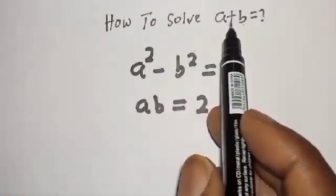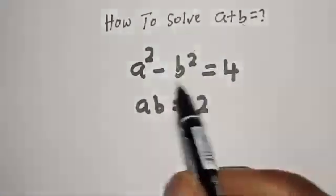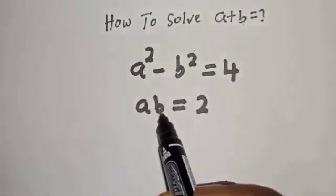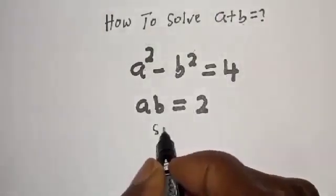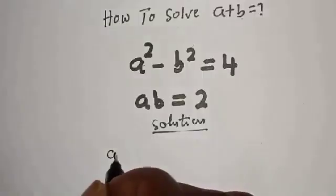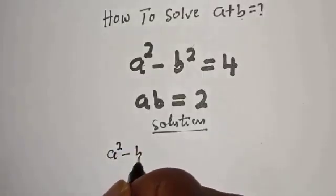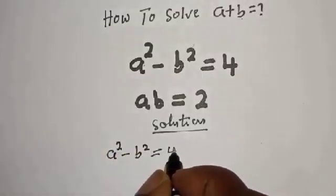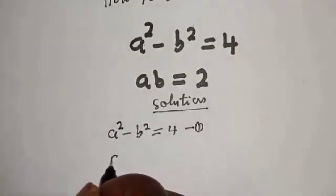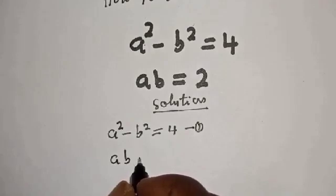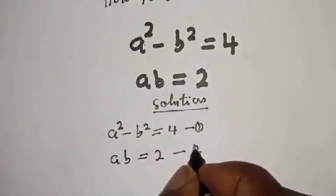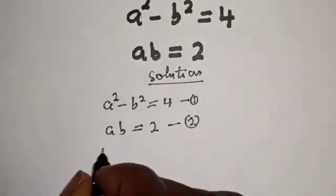How to solve for a plus b in this equation: a squared minus b squared is equal to 4, and ab is equal to 2. Let's call the first equation 'equation 1' and the second 'equation 2'.